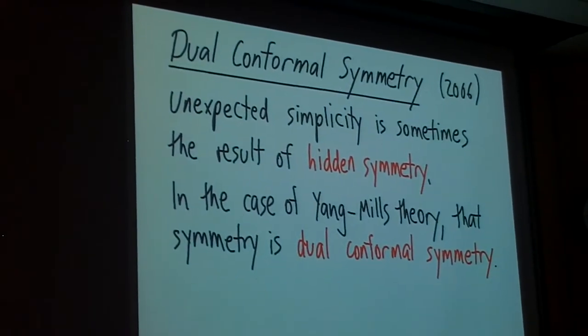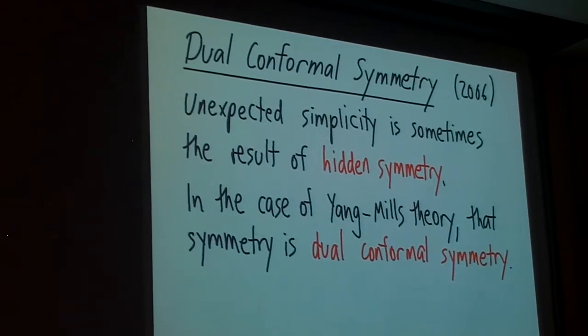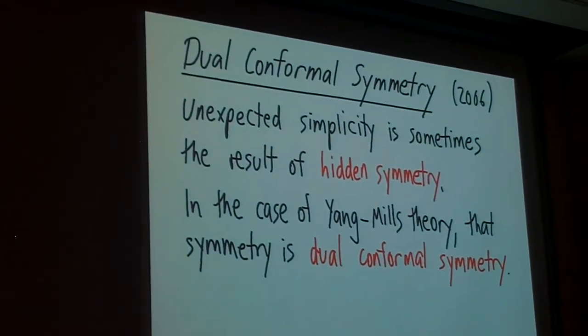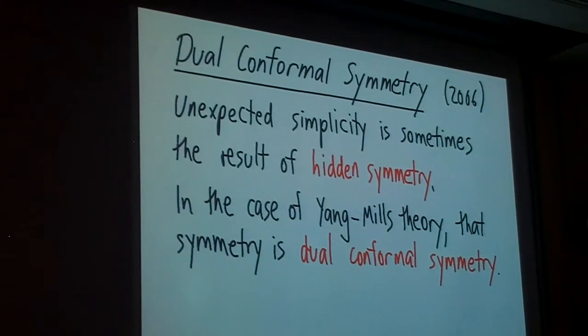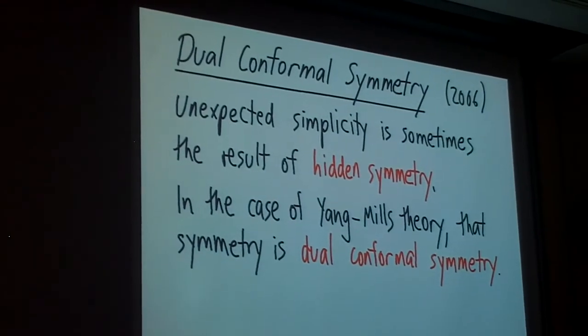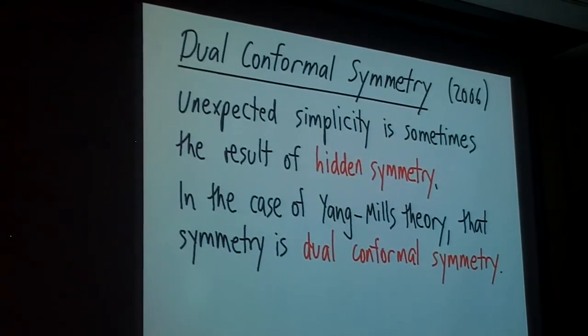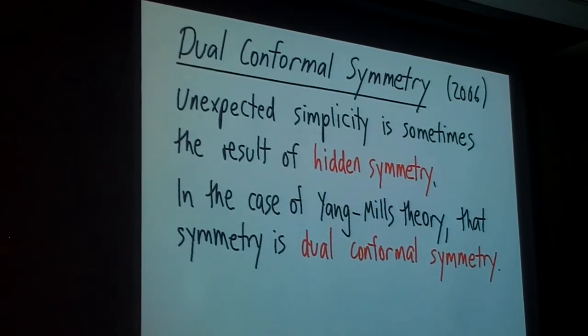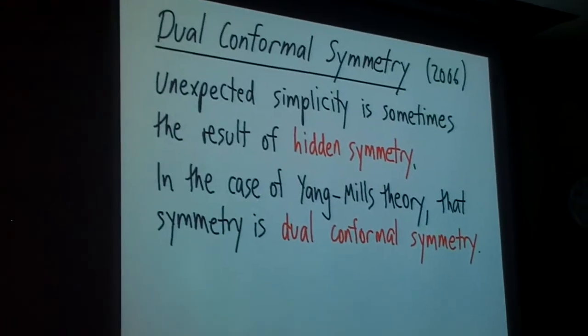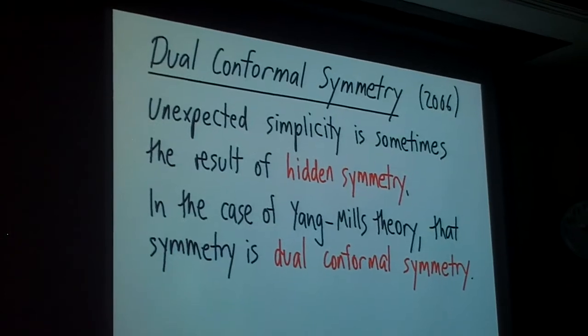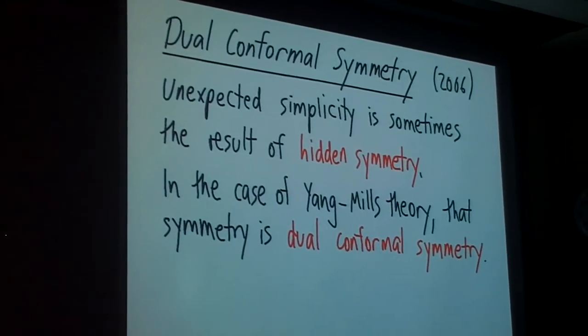Witten's Twister String Theory gives you some beautiful mathematical insight into scattering amplitudes, but it doesn't really explain why the answers should be so simple. We already have Lagrangians, and we know Lagrangians don't give you manifestly simple results, so why should it be that Twister String Theory, something that sounds even more formidable than a Lagrangian, should give you simple results.